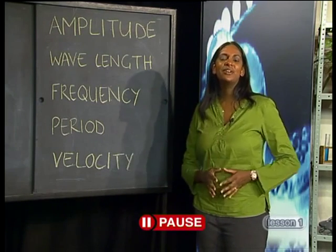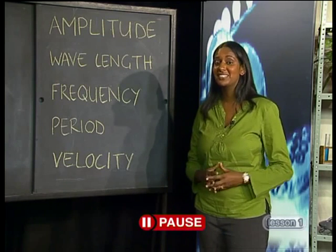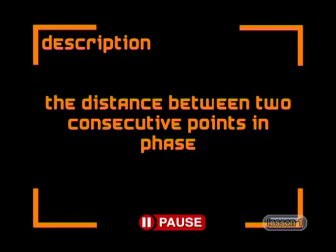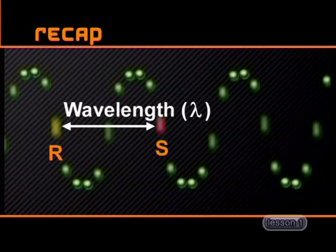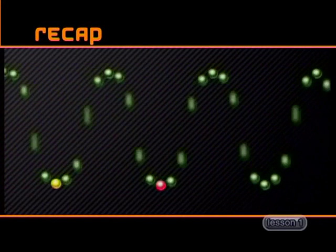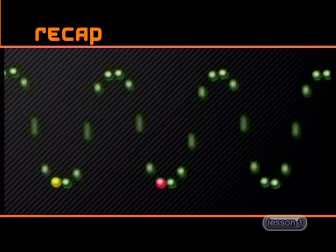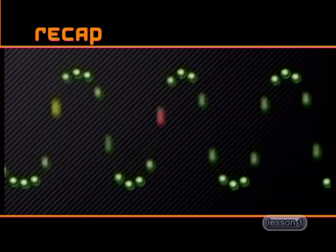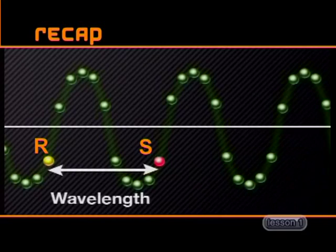See if you can match the description to the correct term. The distance between two consecutive points in phase is the wavelength, lambda, of a wave. Here you can see points R and S moving in phase with each other, and so they are one wavelength apart.